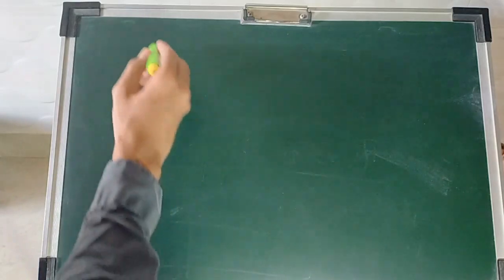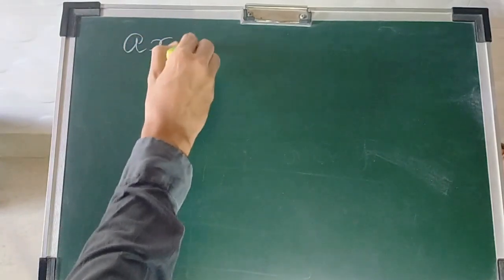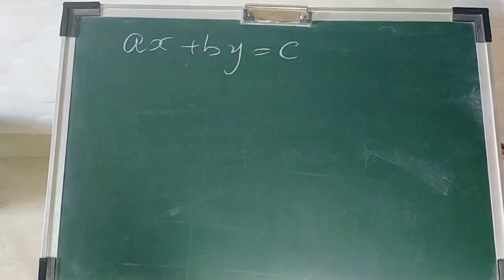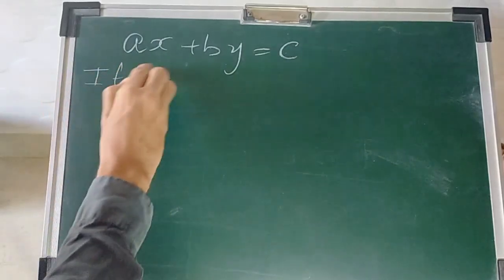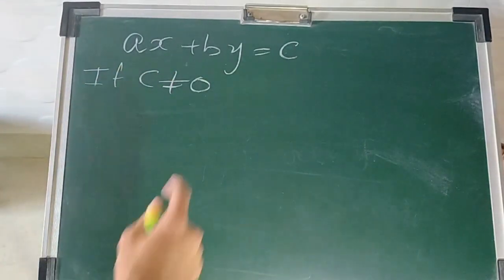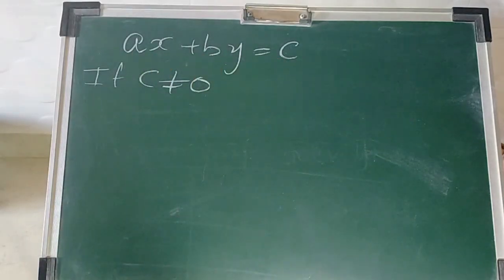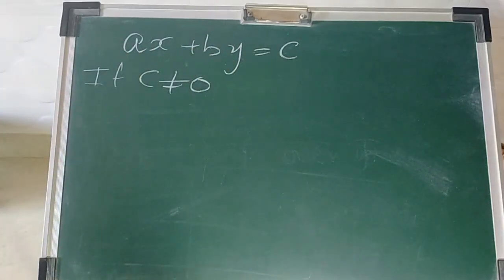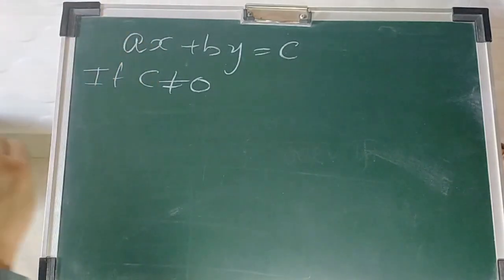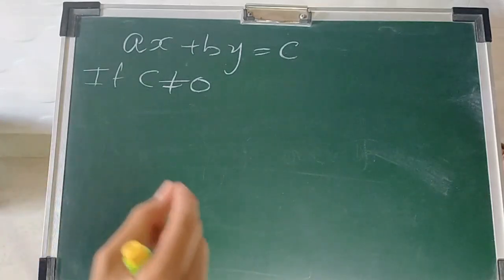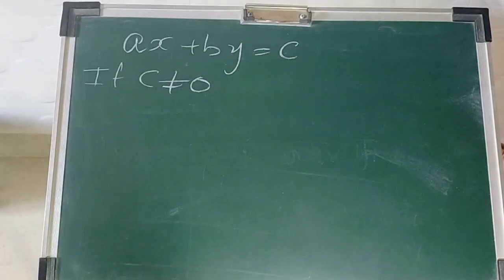We know that the equation of a line can be given by ax + by = c. If c is not equal to zero, this is an equation of a line not passing through the origin. We want to see — can it be a subspace of R² under the given operations? Clearly it is not, since (0, 0) which is the identity is not inside it, but we can see the same thing in a different way.